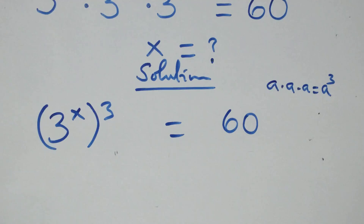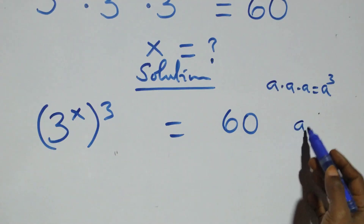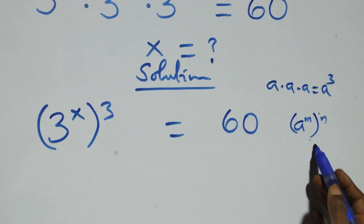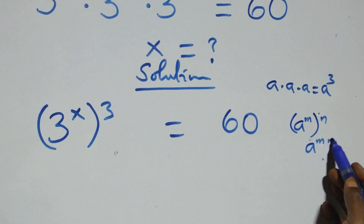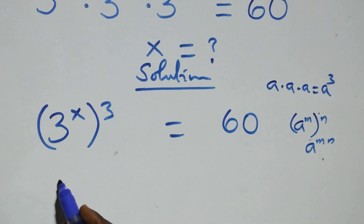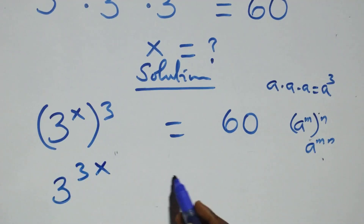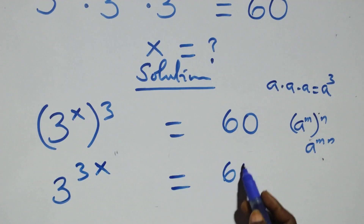This follows the law of indices: when we have A raised to power n, raised to power n, this is the same thing as A raised to power m×n. This power multiplies and we have 3 raised to power 3x equals to 60.